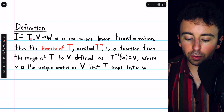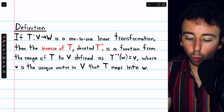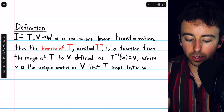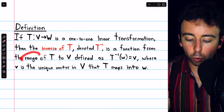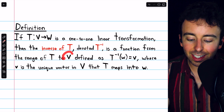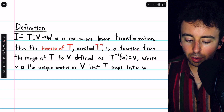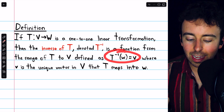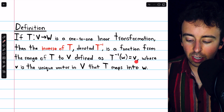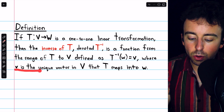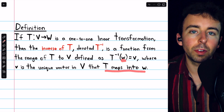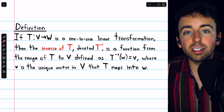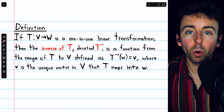If T is a linear transformation mapping V to W, and it's one-to-one — which is important — then the inverse of T, denoted with our familiar inverse notation, is a function from the range of T back to the domain of T, which is V. It's defined like this: T inverse of W is equal to V, where V is the unique vector in the domain that is mapped into that input vector W.